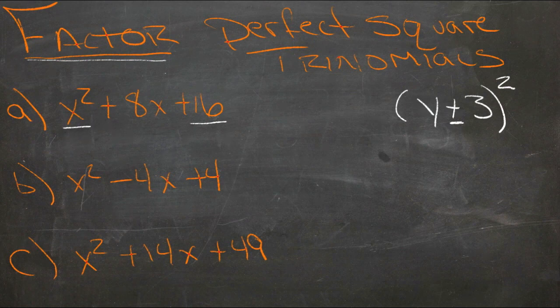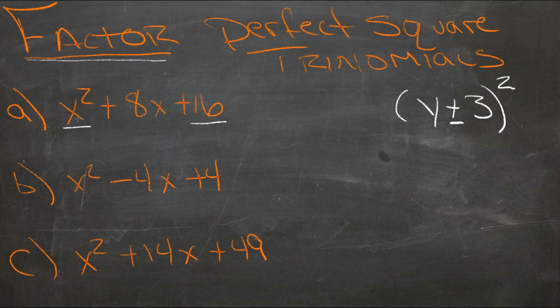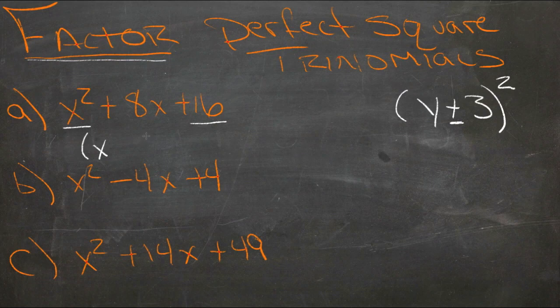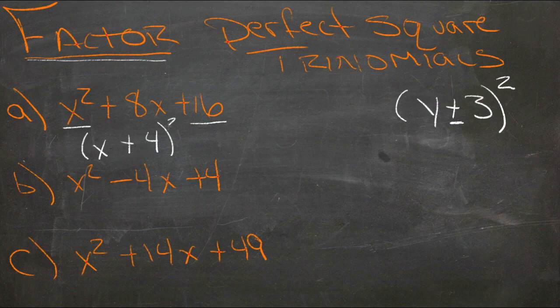So let's just take a look at this first one with that knowledge in our head. The square root of x² is x, and the square root of 16 is 4, and this middle term is positive. So this should then be (x + 4)².